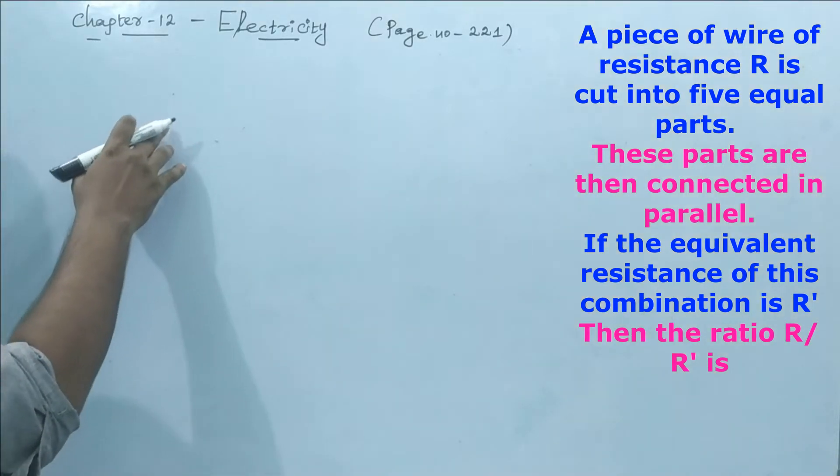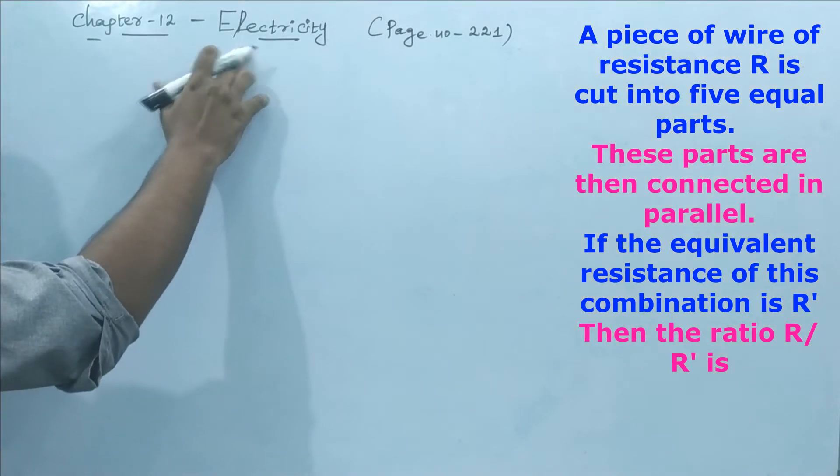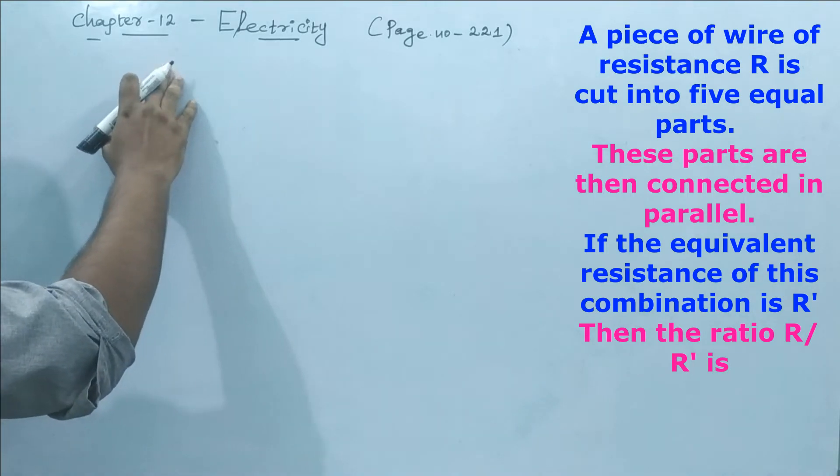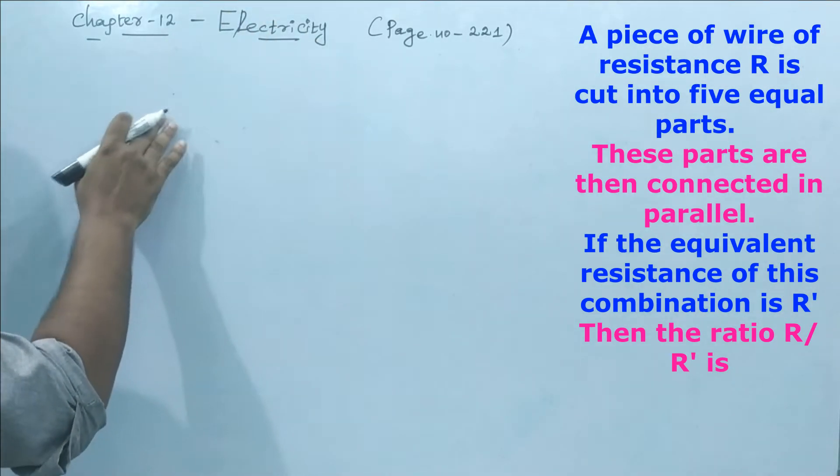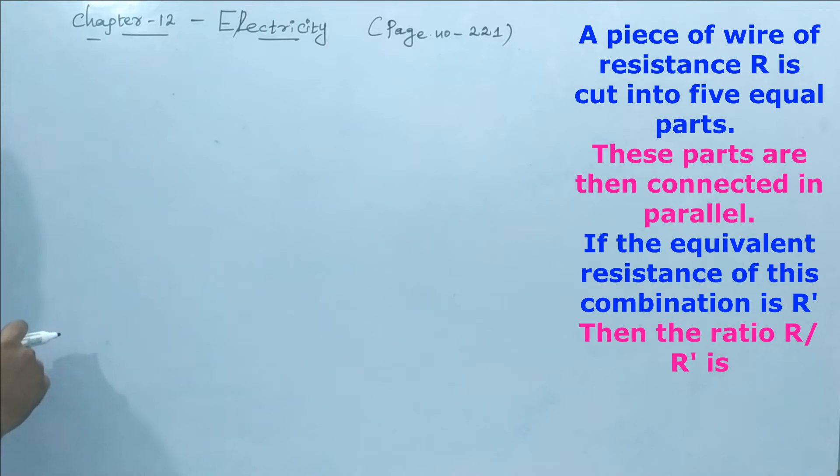Hello students, in 10th class CBSE electricity chapter 12, we are going to discuss page number 221. The first problem is: a piece of wire of resistance R is cut into five equal parts. These parts are then connected in parallel.